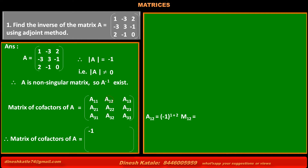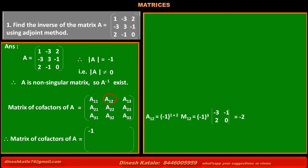A12 is the cofactor of the element at first row, second column, equal to (-1) raised to 1+2 into its minor M12. That is (-1) cubed into the minor with elements -3, -1, 2, 0. Solving: (-1) into (-3 into 0 minus 2 into -1), giving (-1) into 2, equals -2. So the value of cofactor A12 is -2.